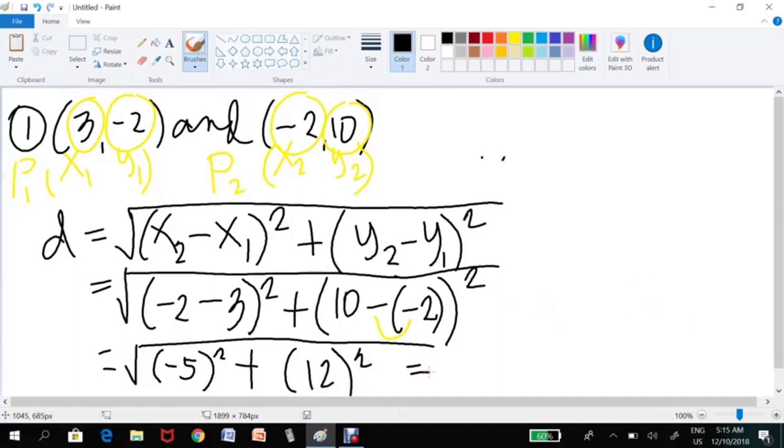And so, that is equal to... d equals -5 squared. -5 times -5. So that's 25. Plus 12² is 144.